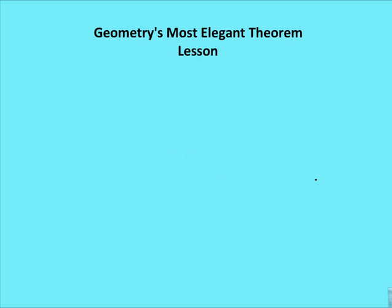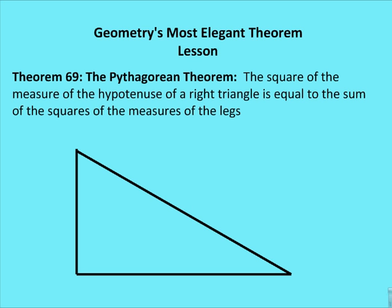So what is the Pythagorean theorem? The Pythagorean theorem states that the square of the measures of the hypotenuse of a right triangle is equal to the sum of the squares of the measures of the legs. So if I have a right triangle and I call one leg A and one leg B and the hypotenuse C, then the sum of the squares of the legs equals the square of the hypotenuse: A squared plus B squared is equal to C squared.